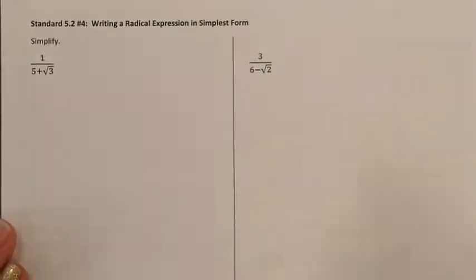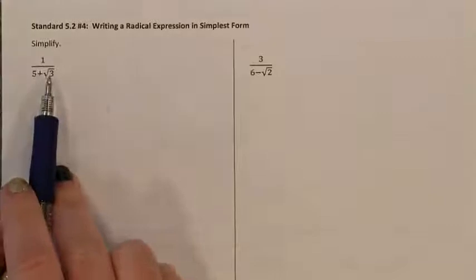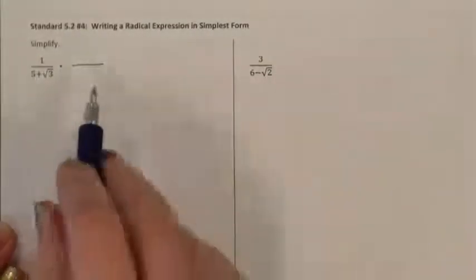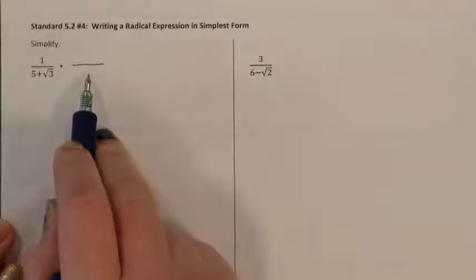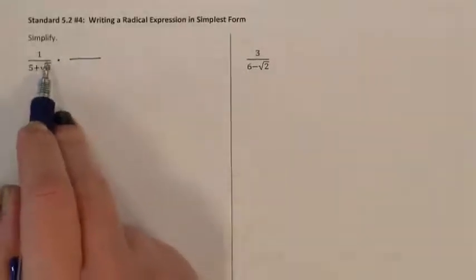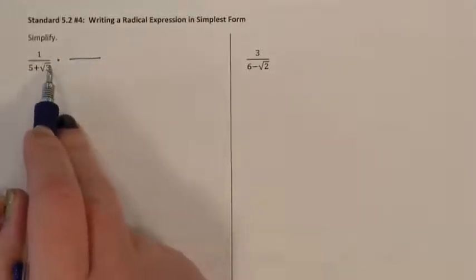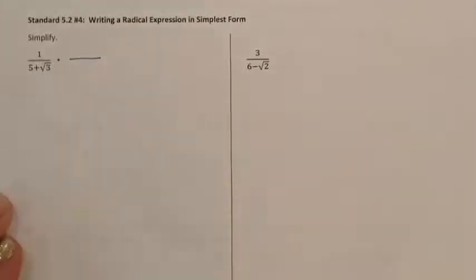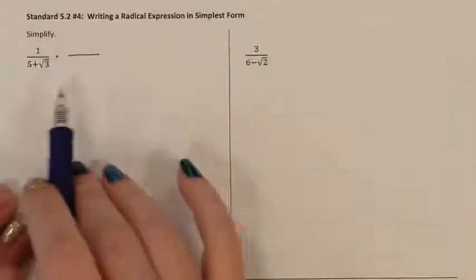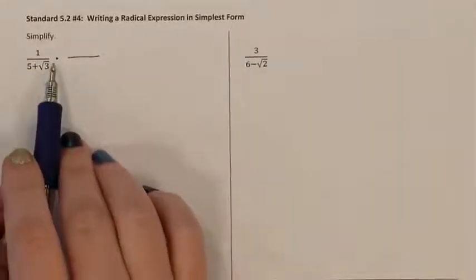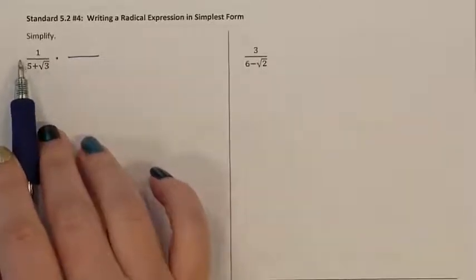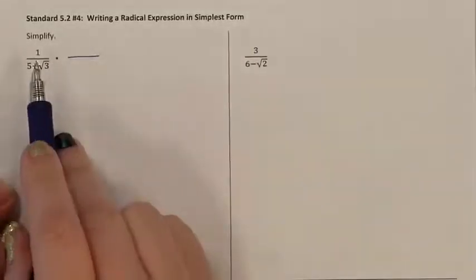We need to rationalize our denominator. We're going to multiply it by a fraction, and that fraction needs to equal 1. This is a special fraction where, when we distribute everything, the square root is going to go away. You are not allowed to have a radical sign in the denominator, and getting rid of it is called rationalizing the denominator.